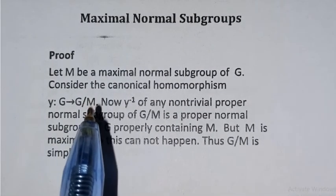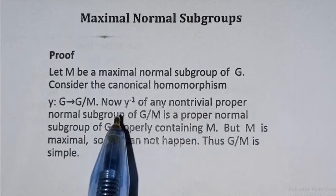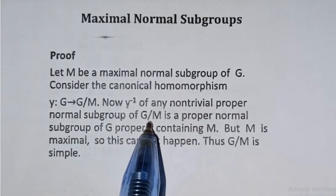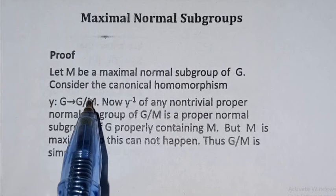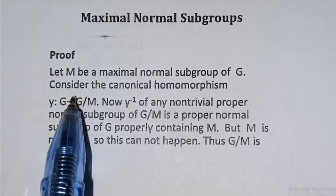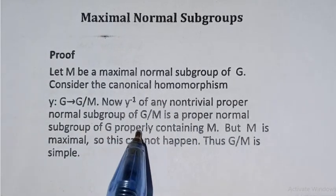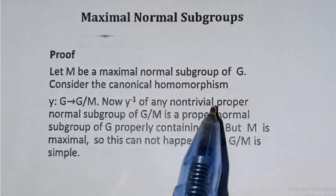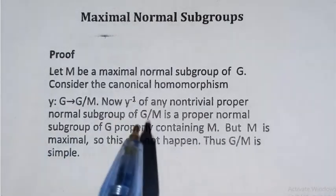If we have a proper normal subgroup of G over M, then its inverse image under Y-inverse gives a non-trivial proper normal subgroup of G in which M is properly contained. But M is maximal, so this cannot happen. Therefore G over M has no non-trivial proper normal subgroup, meaning G over M is a simple group.